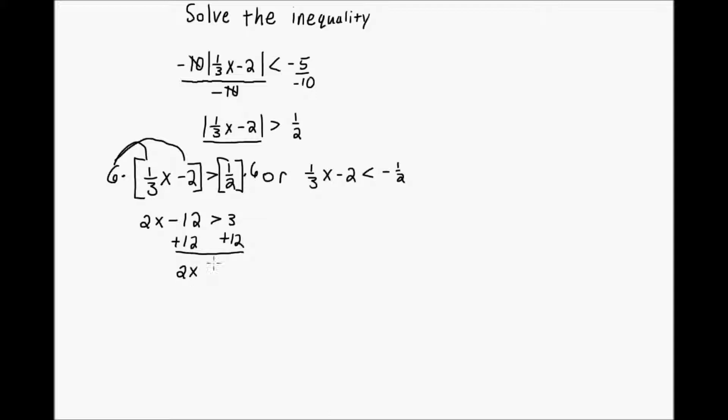I'm going to add 12 to both sides. And now I have 2x is greater than 15. My final step will be to divide both sides by 2, and I have that x is greater than 15 over 2. Notice I didn't have to flip the inequality here because I was dividing both sides by a positive number and not a negative number.